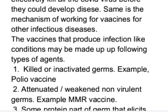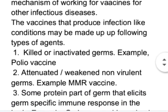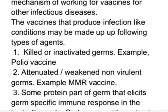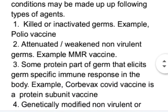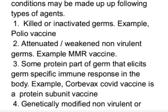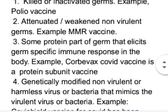The vaccines that produce infection-like conditions may be made up of the following types of agents. First, vaccines may be made up of killed or inactivated germs — for example, the polio vaccine. Second, the vaccine may be made up of attenuated or weakened non-virulent germs — for example, the MMR vaccine. Third, vaccines may be made up of some protein part of a germ that elicits germ-specific immune response — for example, Corbevax COVID vaccine is a protein subunit vaccine.